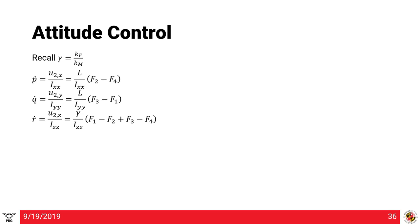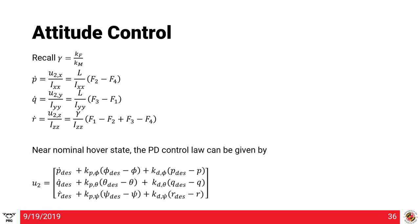Recalling gamma = K_f / K_m (ratio of force to moment constants), we can write p_dot = u2x / I_xx, where u2x = l·(F2 - F4). This gives us equations for roll, pitch, and body rates. Near the nominal hover state, we can define a PD control law: u2 = p_dot_desired + KP·(phi_desired - phi) + KD·(p_desired - p). Similarly, we define this for q and r. Using the dynamics matrix, u_desired can be computed as K_f times a matrix of propeller angular rates squared.